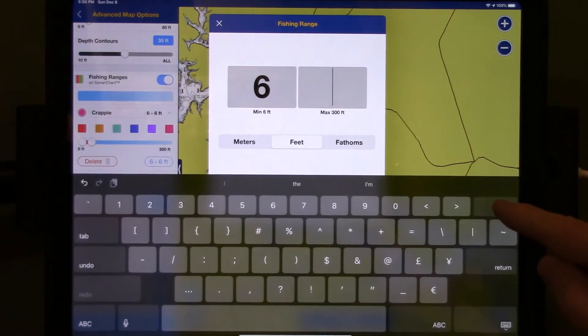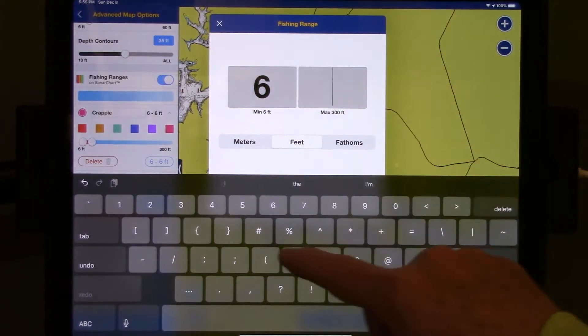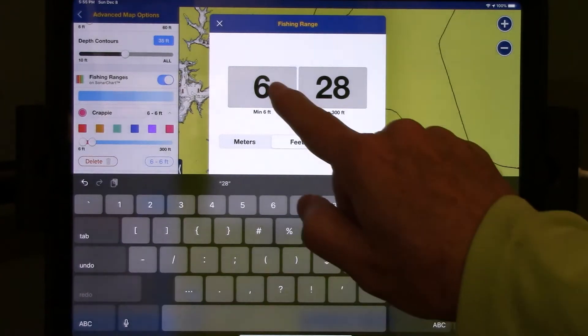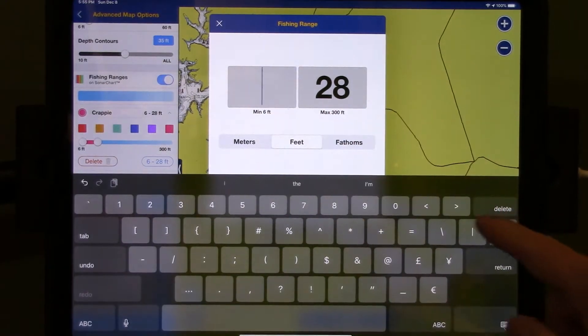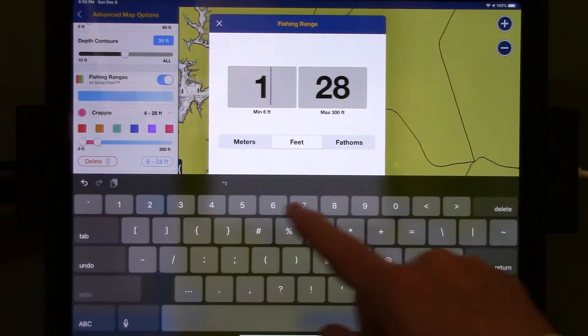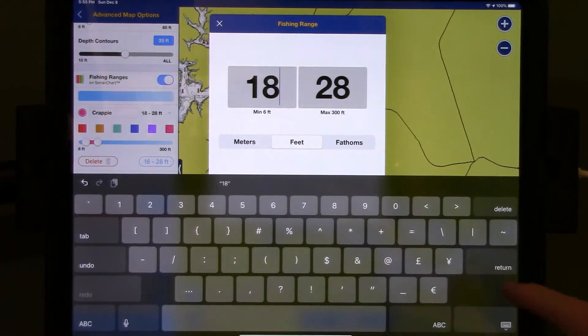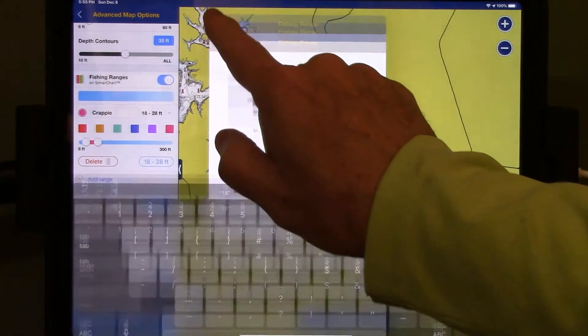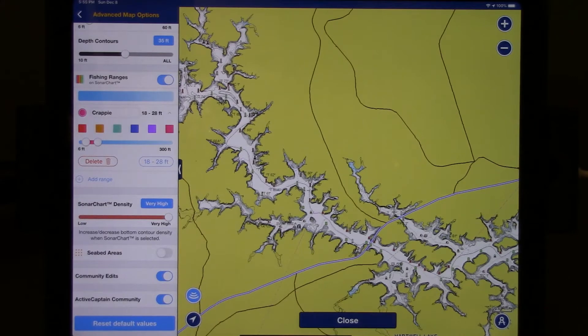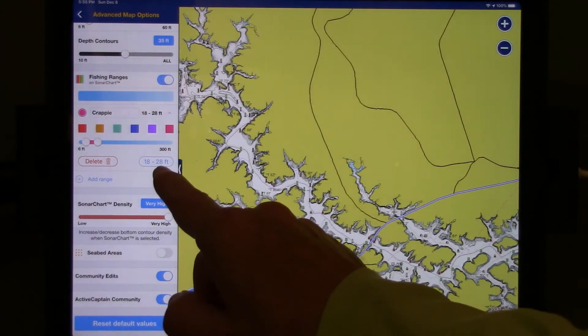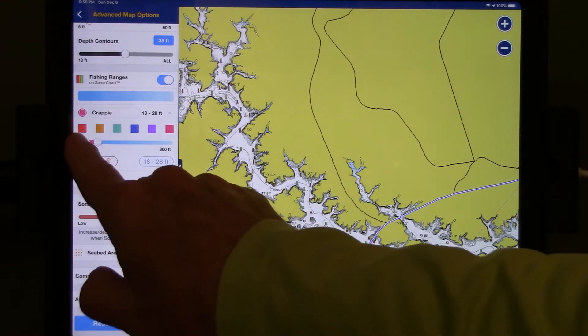The first thing I'm going to do is set the maximum, and I'm going to set that to 28. Then I'm going to come over here and change this to 18. So now what this is going to do is set up my chart so that all of the areas on the chart that are from 18 to 28 feet can be highlighted in red.